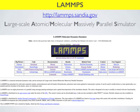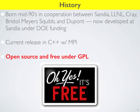So where did it come from? It was born in the mid-'90s as a cooperation between Sandia National Lab, Lawrence Livermore National Lab, Cray Computer Company, Bristol Myers Squibb, and DuPont. This sort of combined academic-industrial partnership wanted to make a molecular simulator — National Labs for various things, Bristol Myers Squibb probably for drug design, and DuPont for materials chemistry. It's now developed exclusively at Sandia under Department of Energy funding, which means they have to make it freely available to everybody, so we can download and use it ourselves.